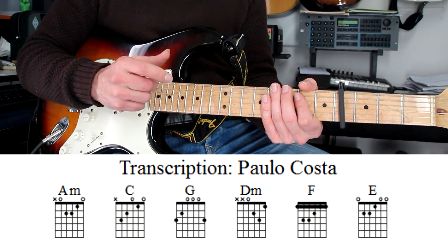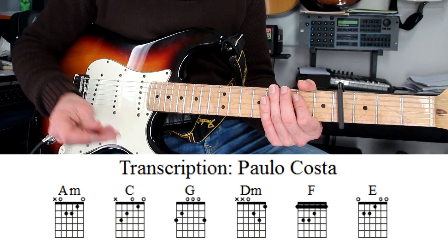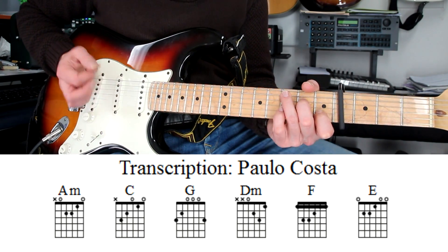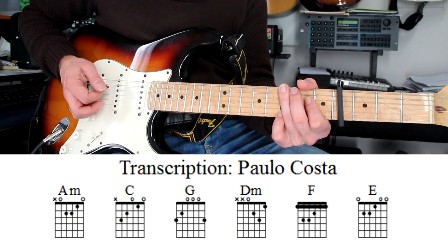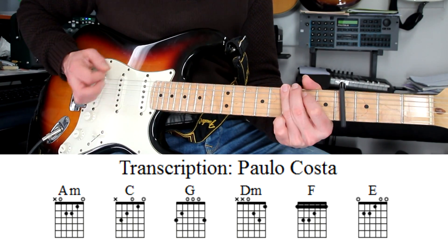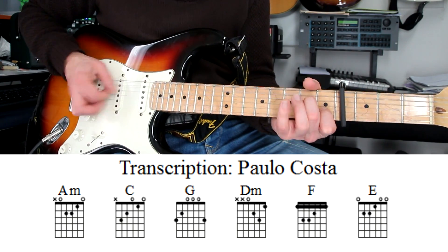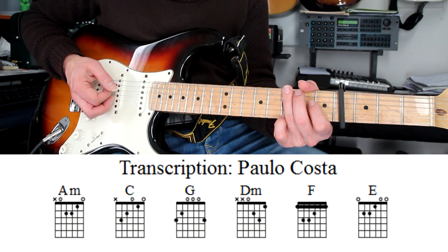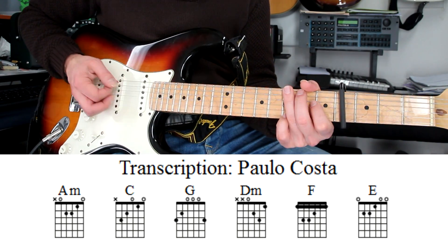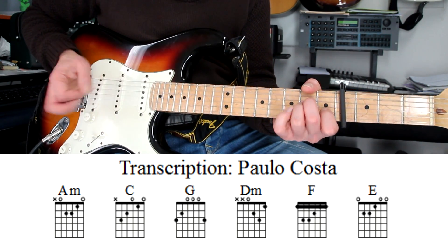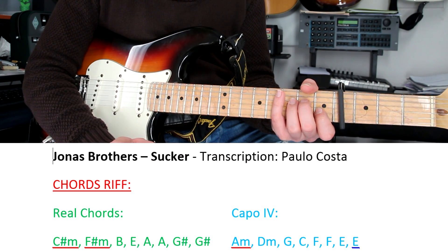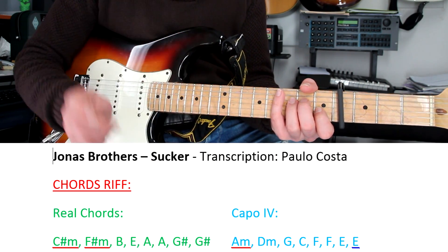If you want to mix the chords with the riff it will be also a little bit easier like this. And the chords riff with the capo at the 4th fret it will be played like this as you can follow below.